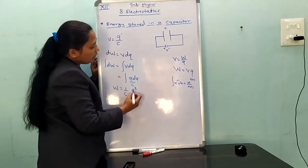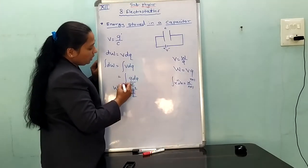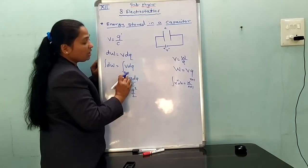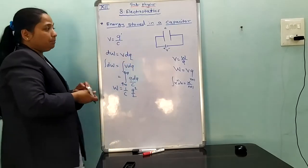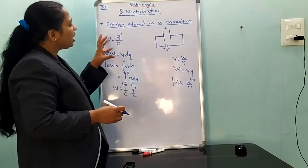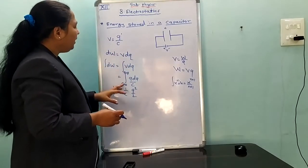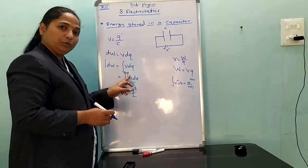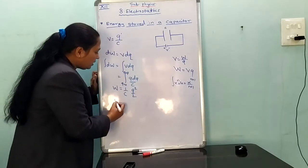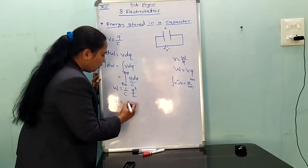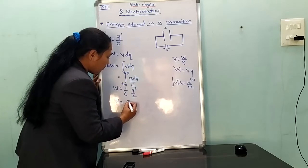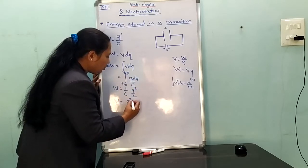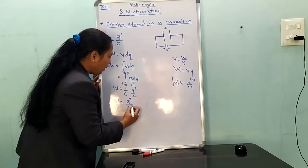The integration limits go from Q equals 0 to Q equals capital Q, representing the total charging process completed. Therefore, the total work done is equal to Q squared upon 2C, by substituting the upper limit capital Q.